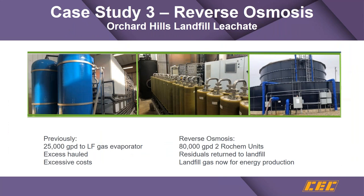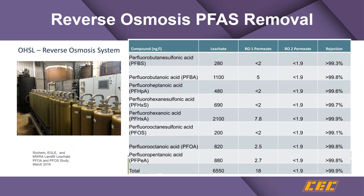Orchard Hills Landfill has a reverse osmosis system. They had a plant improvement — the original system had a 205,000-gallon-per-day gas evaporator, which was replaced with an 80,000-gallon-per-day Rochem reverse osmosis unit with residuals returned to the landfill. They have significant removal results, with virtually all PFAS constituents down to low single digits, and the system has been in operation for several years.